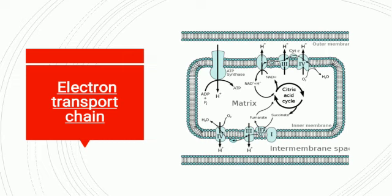This is the structure of the electron transfer chain, showing the outer membrane and the inner membrane. Remember, an ATP synthase works as a catalyst.